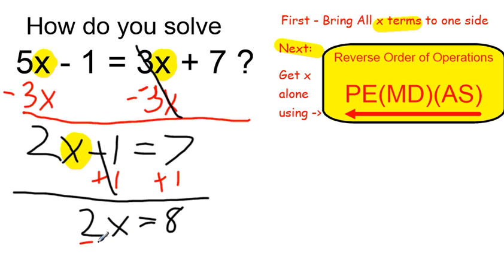To undo the multiplication by 2, which is implied with the 2 next to the x, I'm going to divide by 2, and that's going to leave me with x equals 4. I'm proposing that that's my solution, x equals 4.